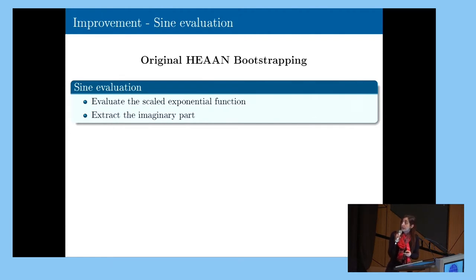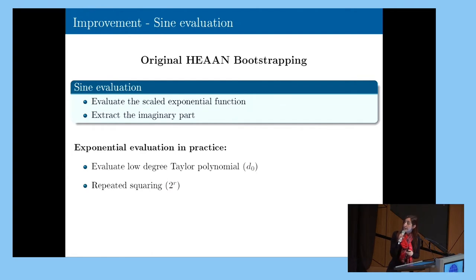So in order to perform this in an efficient way, in particular the exponential evaluation, they do it in two steps. They start by evaluating a low-degree Taylor polynomial of a low degree d_0 that approximates the exponential in a precise way on a very small range. And then they obtain the desired precision on the larger range by doing repeated squaring.